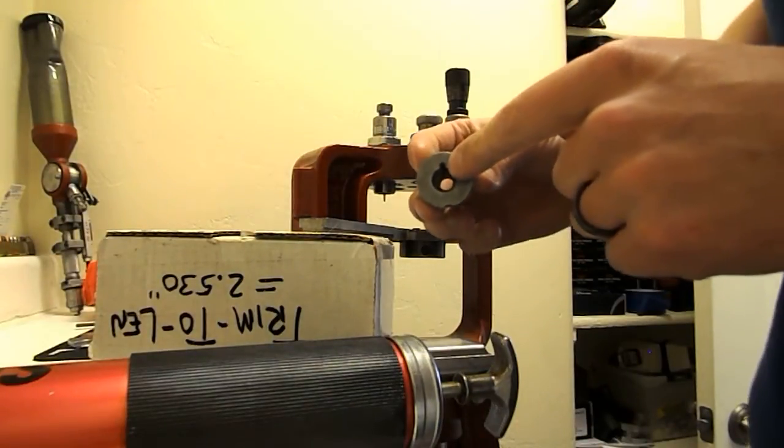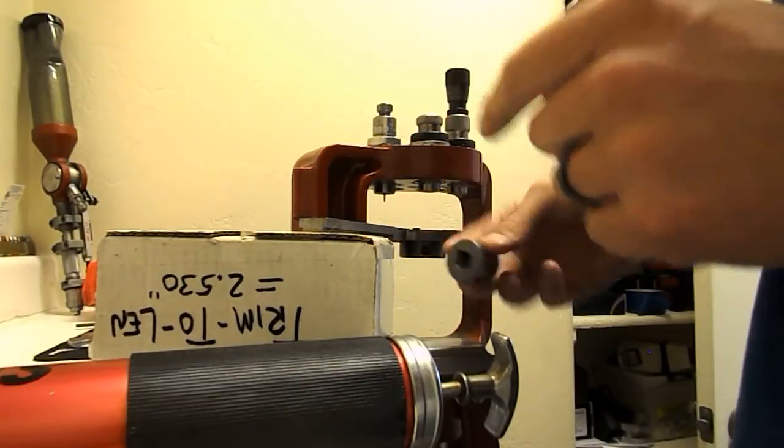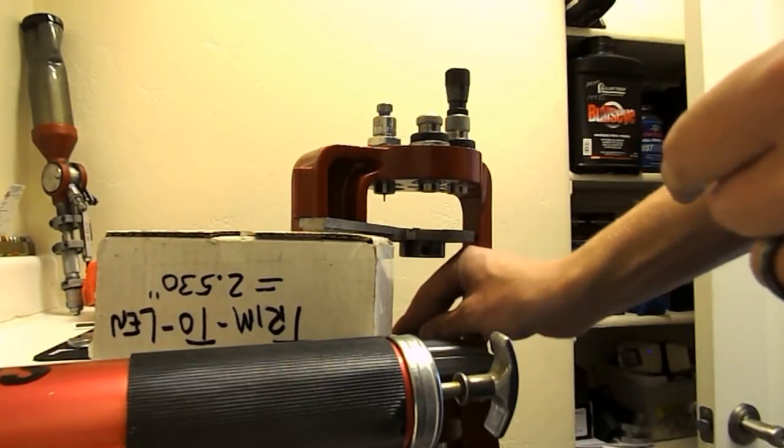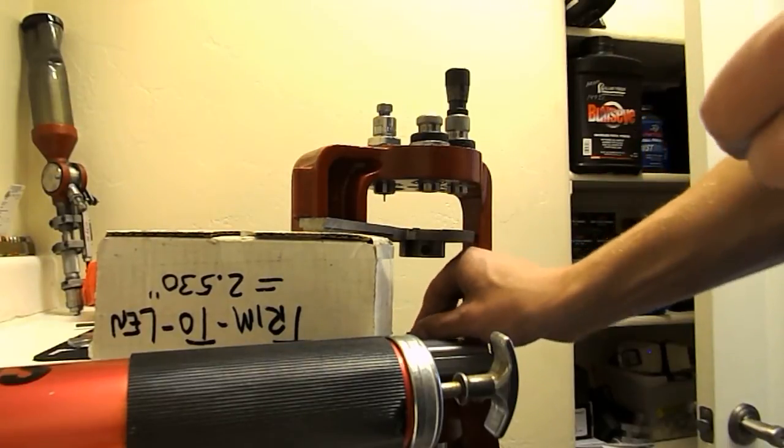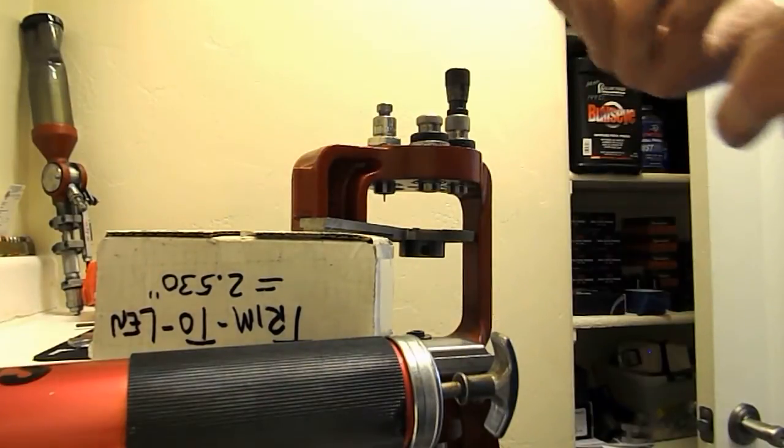Then to reassemble it you just align this key slot with the pin that's poking out of the drive shaft. Go ahead and wiggle that down in there. Alright. It's been seated.